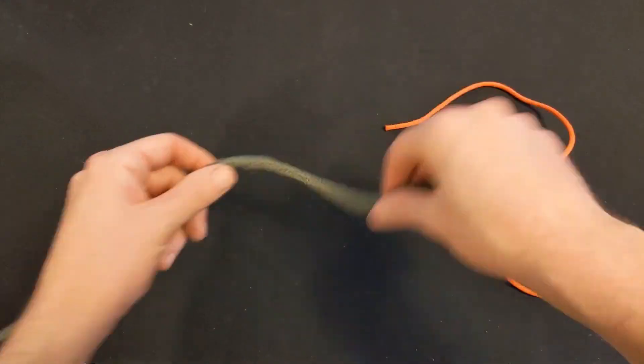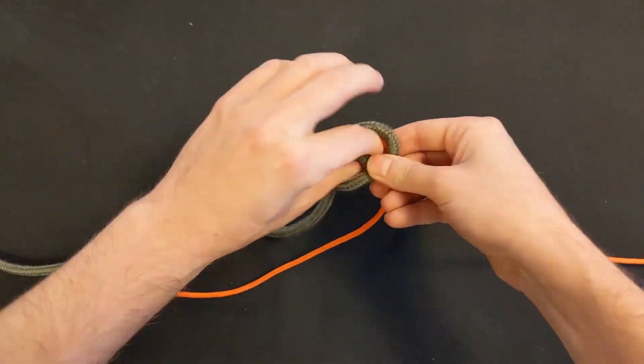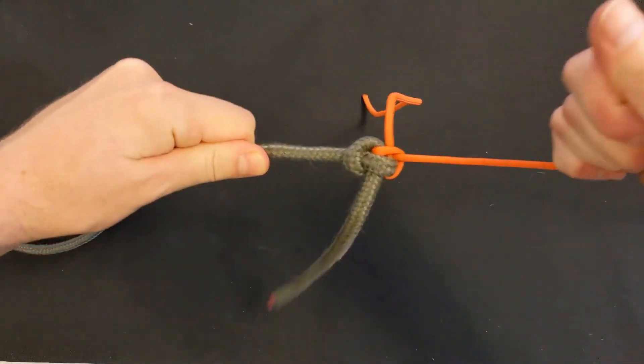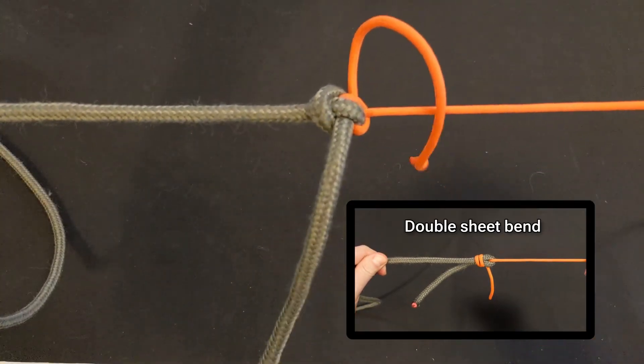It seems you can use a Zeppelin bend to connect ropes with different diameters as well, but you might be better served with a double sheet bend for this instead.